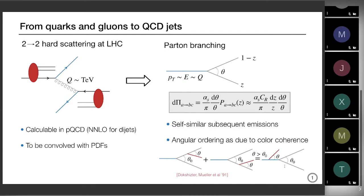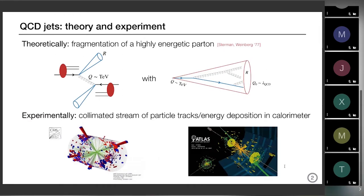With these two elements we can already construct what we call a jet in theory. We replace the single parton with a more cone-like structure, which can be understood from the fact that the emissions are highly collimated. It's very natural to put a cone around this parton shower. All branches go from the TeV scale to Lambda QCD, exploring a whole range of scales. Now how does this picture match what we see in experiment — a collimated string of particles or tracks in the calorimeter, as seen in pictures from CMS or ATLAS?